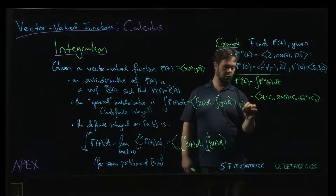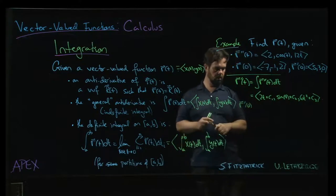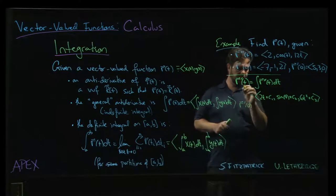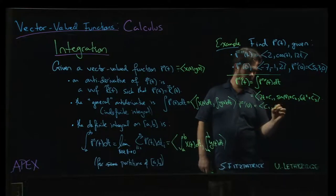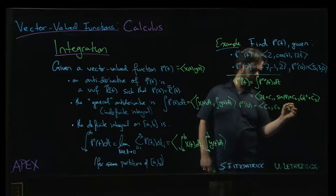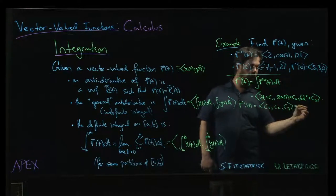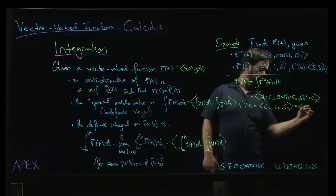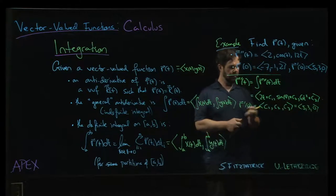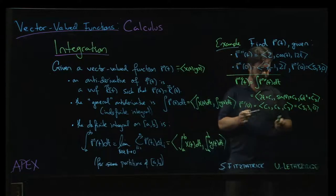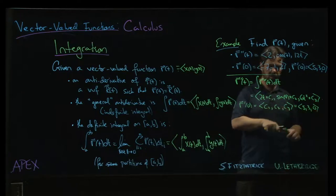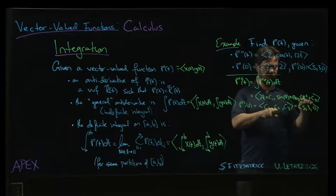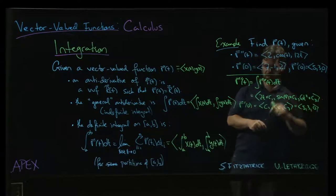Now, r prime of 0, on the one hand we can just plug in t equals 0, and we're left with c1, c2, c3, and that's also supposed to be 5, 3, 0, right? So now we know because, of course, two vectors, if two vectors are equal, the corresponding components have to be equal. So we know that c1 is 5, c2 is 3, c3 is 0. Good.